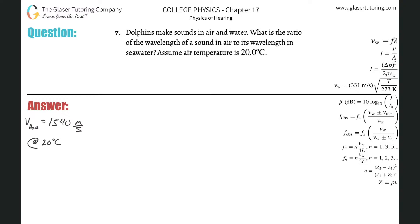Number seven. Dolphins make sounds in air and water. What is the ratio of the wavelength of a sound in air to its wavelength in seawater? Assume that air temperature is 20 degrees Celsius.